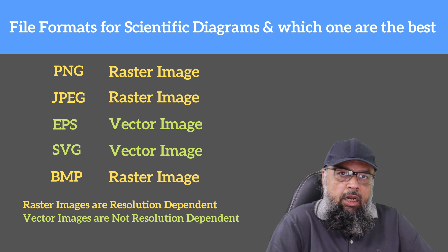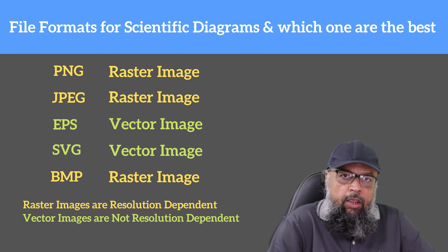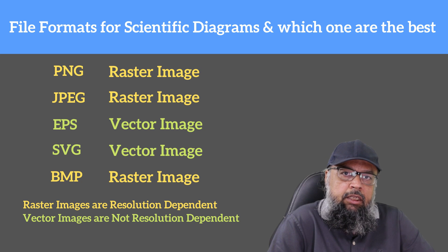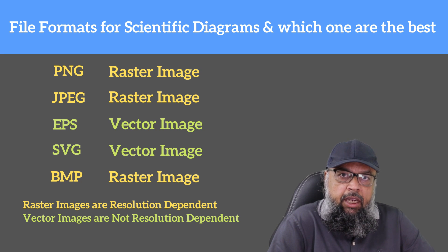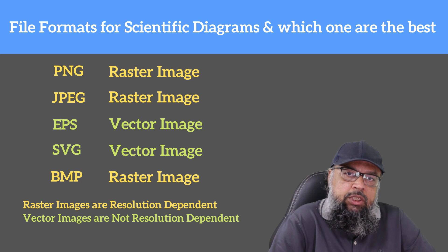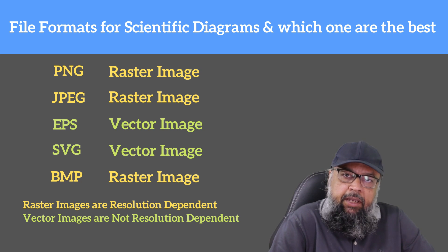The next thing to highlight is file formats. Image file formats can be divided into two main classes: raster image formats and vector image formats. Raster images are resolution-dependent — if you change the size, the quality changes. Vector images stay razor sharp regardless of size. For academic demonstrations and presentations, raster images are good enough, but for publishing in a journal or writing a book, you should use vector images if possible. EPS is one of the best formats for this, discussed in a separate video on my channel.